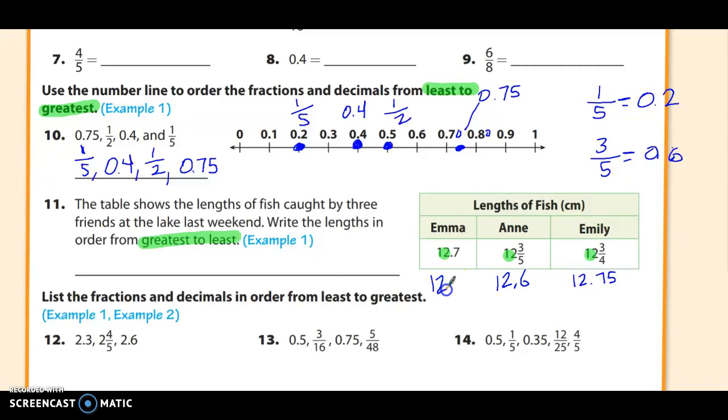Now I have 12.7, 12.6, and 12.75. And you should notice that this one is to the hundredths place. And these two are to the tenths place. So I'm immediately going to annex a 0 and make it 12 and 70 hundredths, 12 and 60 hundredths, 12 and 75 hundredths.